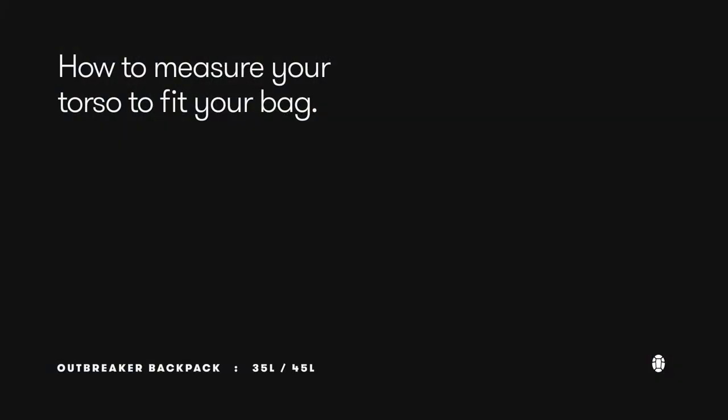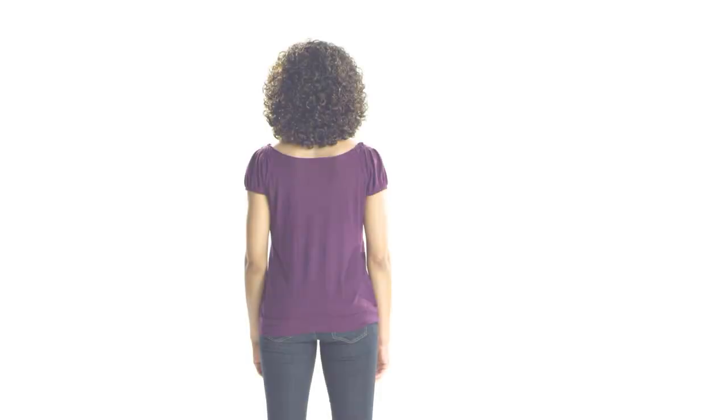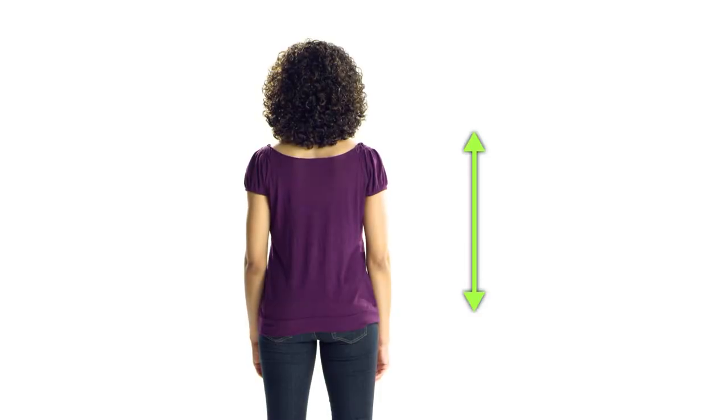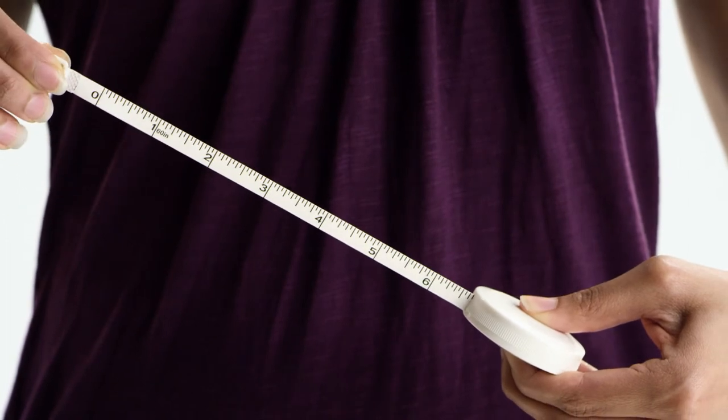It's easy to measure your torso to get a perfect fit for your outbreaker. Start by measuring your torso along your spine. Use a soft tape measure and ask a friend to help.